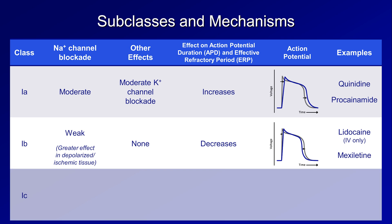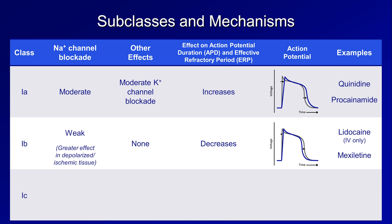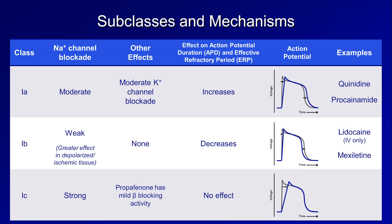Last are the 1c drugs. As you might guess, these are relatively strong blockers of sodium channels. One of the two major 1c drugs, propafenone, also has some beta-blocking effect as well. Neither of the 1cs affect the action potential duration or refractory period, so the action potential of a patient on a 1c drug shows a markedly slowed upstroke but is otherwise normal. The two major 1c drugs are flecainide and propafenone.